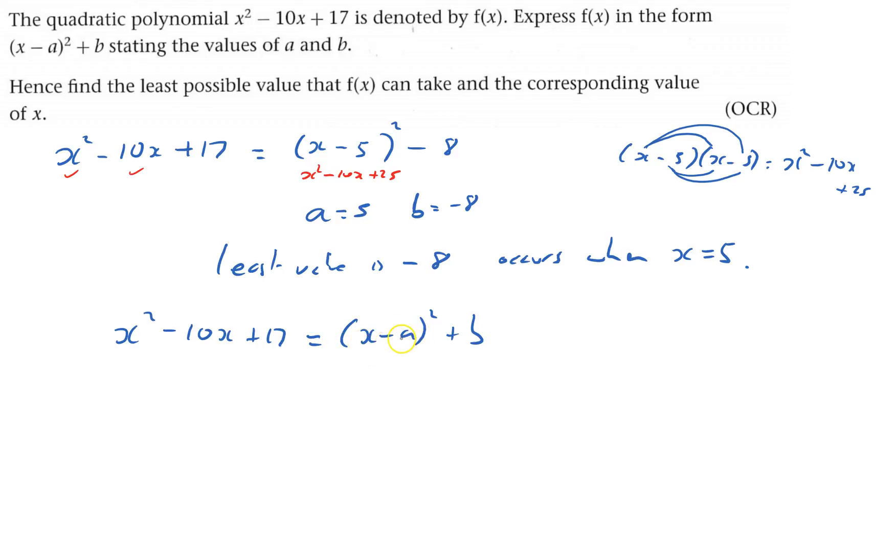I need to multiply this out to start off with. So I've got x minus a times by x minus a, which gives me x squared minus a, minus another a, minus 2ax, and finally plus a squared.